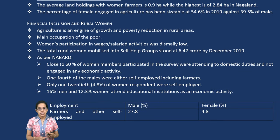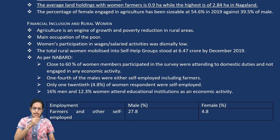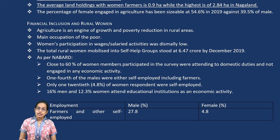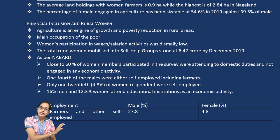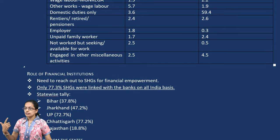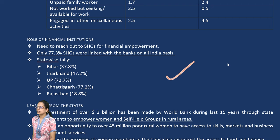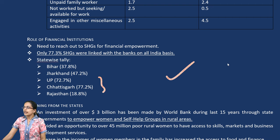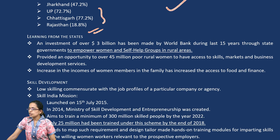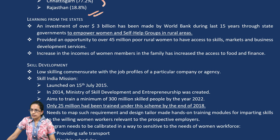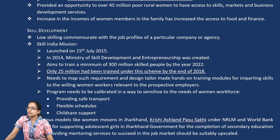Financial inclusion is again important. We have the Jan Dhan Scheme through which zero-balance bank accounts have been created. We are talking about increasing the participation of women, mainly in domestic duties — which is 60 percent. One-fourth of males are self-employed as farmers and nearly one-twentieth of women are self-employed as farmers, so changing this proportion is very important. For self-help groups, the highest proportion is seen in UP and Chhattisgarh and very low in Rajasthan. Skill development has been advanced through the Ministry of Skill Development and Entrepreneurship.